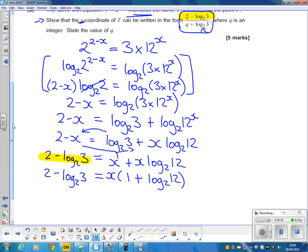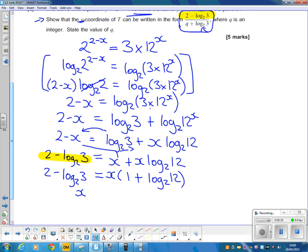We're very nearly there. So x is 2 minus log base 2 of 3, divided by 1 plus log base 2 of 12. And you'd think after all that work, that would be the answer. But we have a look, and although the top line is the same, we haven't quite got the bottom line the same yet. We've got log base 2 of 12, and they want log base 2 of 3.